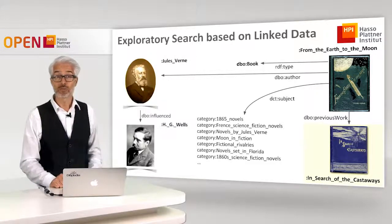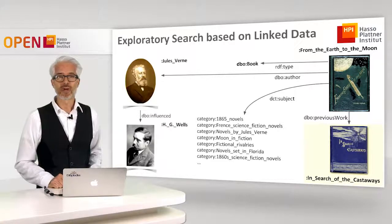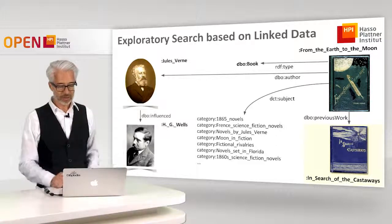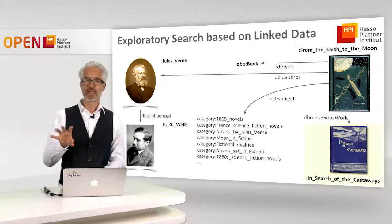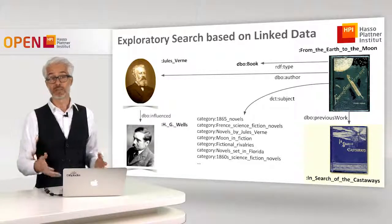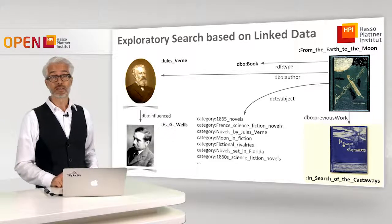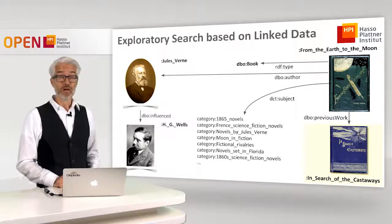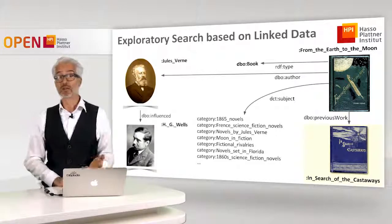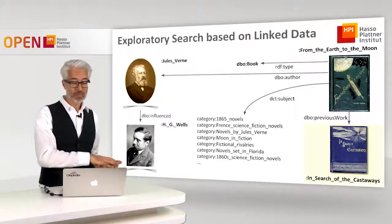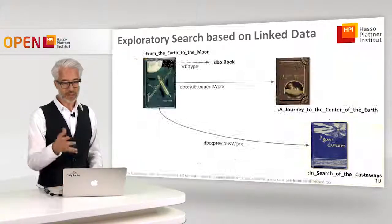We have even more information from the categorical system. Looking at the property DCT subject, the book belongs to categories like 1865 novels, French science fiction novels, novels by Jules Verne, fictional rivalries, novels set in Florida, and so on. These categories capture content and provenance and can be used to make educated, intelligent recommendations. We also find that H.G. Wells was influenced by Jules Verne, so books by H.G. Wells might be interesting for a reader of Jules Verne.